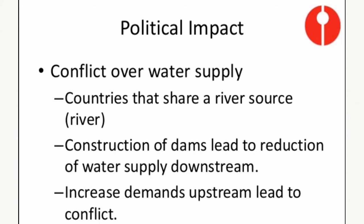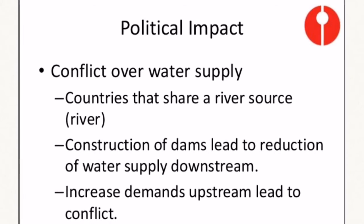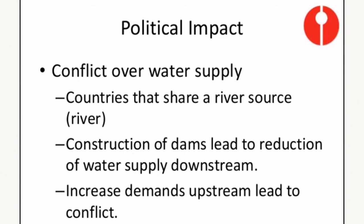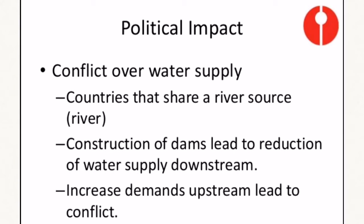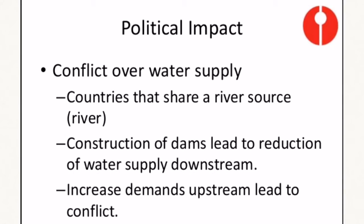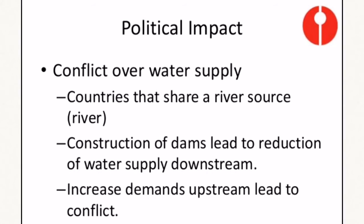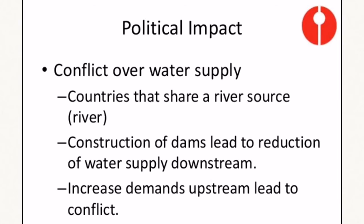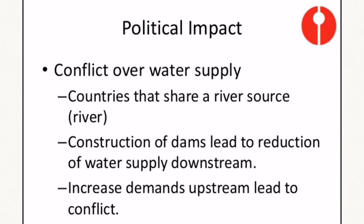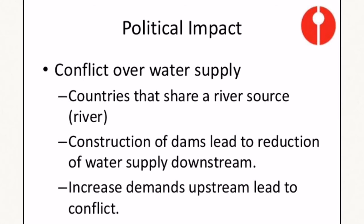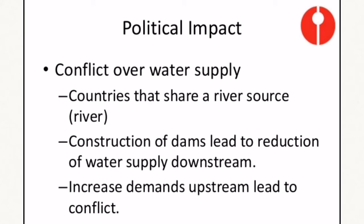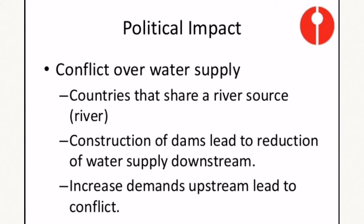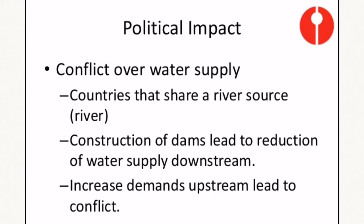In terms of political impact, when you have water resources that are shared, you can have conflicts over the water supply when many countries share that particular water resource. One example is the Mekong River — a very long river that starts in China and stretches across many countries in Southeast Asia, like Vietnam, Myanmar, Thailand, and Cambodia. When a dam is constructed upstream, the total water supply downstream is decreased. There are many different impacts, both on ecology and on human life.